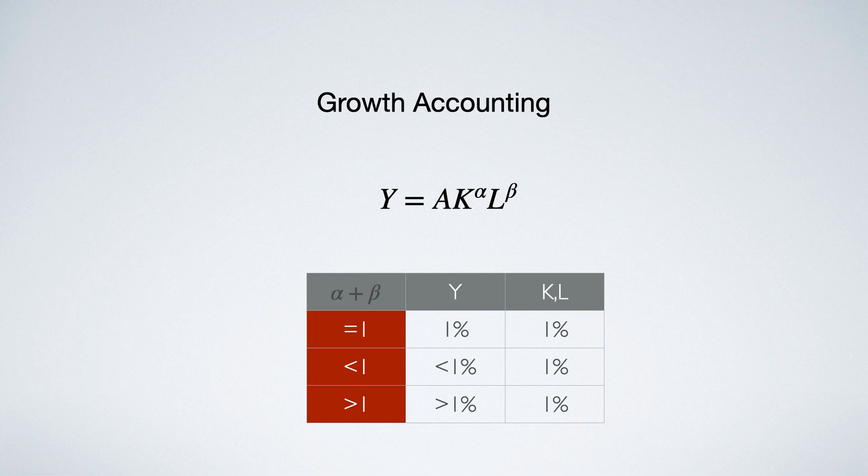Then alpha plus beta being greater than 1 may have positive net growth. But such practice only confirms that all existing growth theories are accounting.